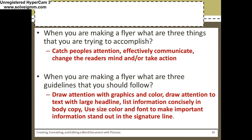When you're making a flyer, what are the three things you are trying to accomplish? Basically, if you're making a flyer you want to get people to do something. For example, if you have a car for sale you want them to buy the car. If you have a lost dog you want them to come and get it. To do that, you need to catch people's attention, effectively communicate — if there's too many words they're not going to look at it — and change the reader's mind to take action.